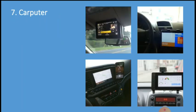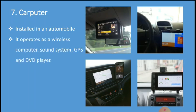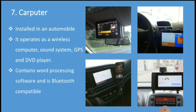The seventh type is the Carputor. It is a computing device installed in a car. It operates as a wireless computer, sound system, global positioning system (GPS), and DVD player. It also contains word processing software and is Bluetooth compatible.